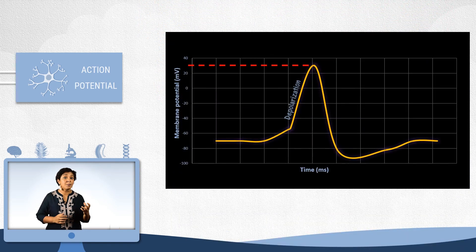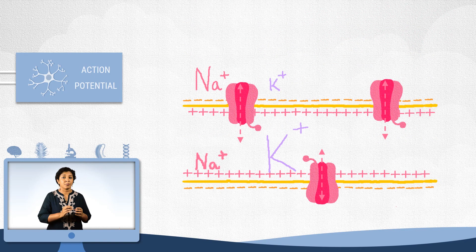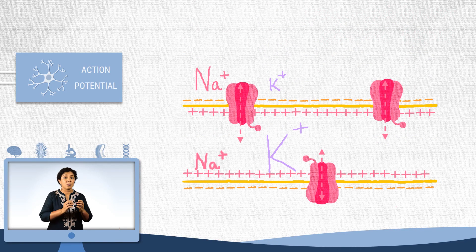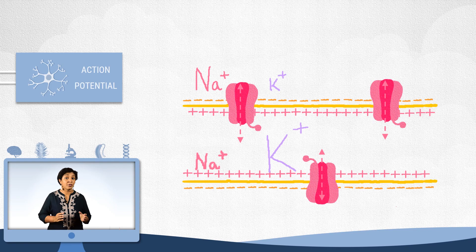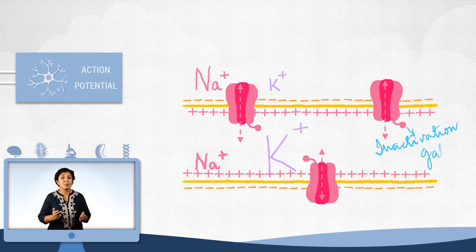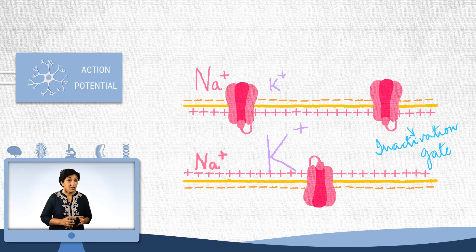At about 20-30 millivolt, the sodium ion will reach equilibrium. And there will be little net movement because the electrical and the concentration gradient will be acting equally in opposite directions. However, these channels do not stay open for long. They have another gate called the inactivation gate, which closes these channels in a few milliseconds.